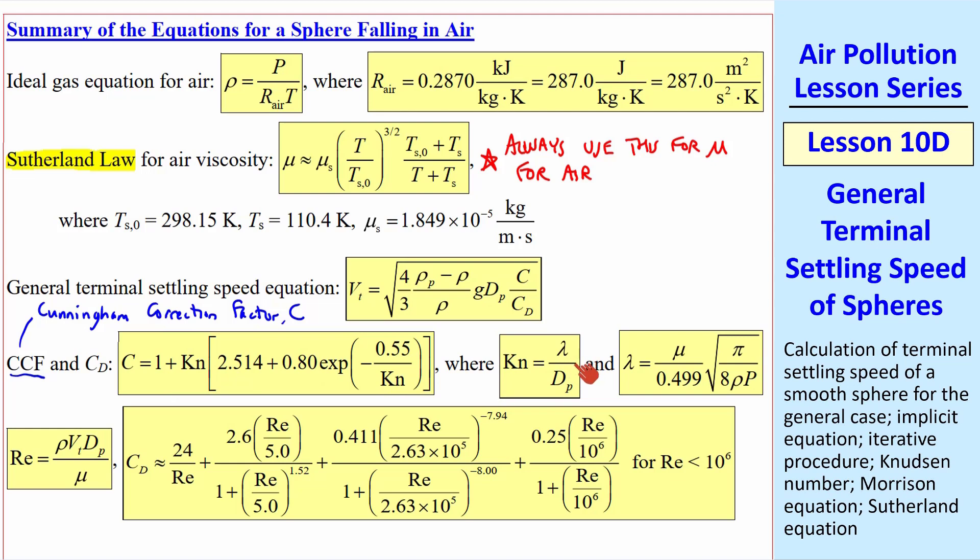C is given by this expression, where Knudsen number is λ over dp, and for air, λ is given by this expression. Finally,